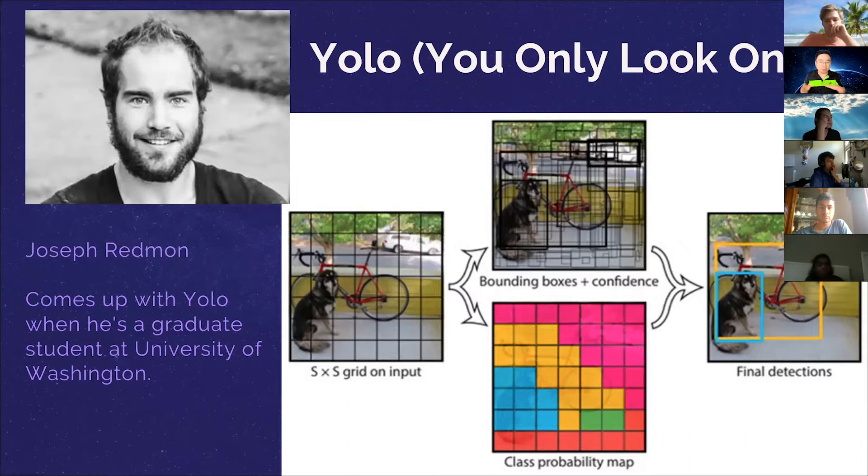Joseph Redman, he came up with this algorithm. He was a grad student at University of Washington. When he's a grad student, you could be him 10 years later, right? Just 10 years.